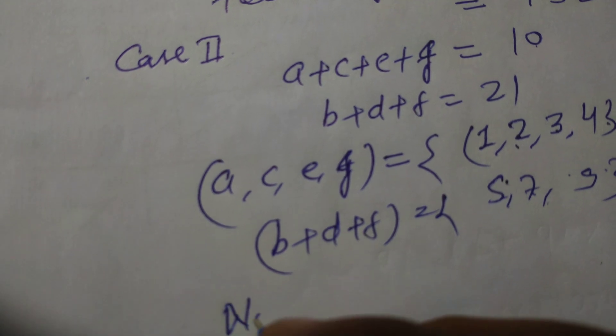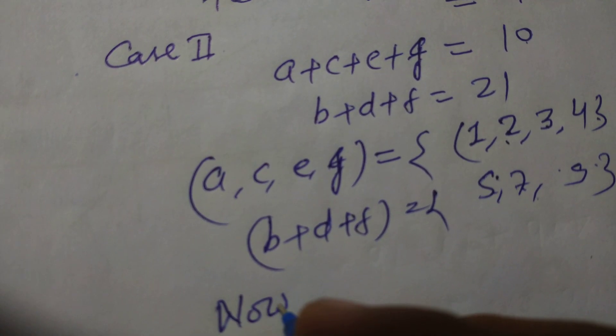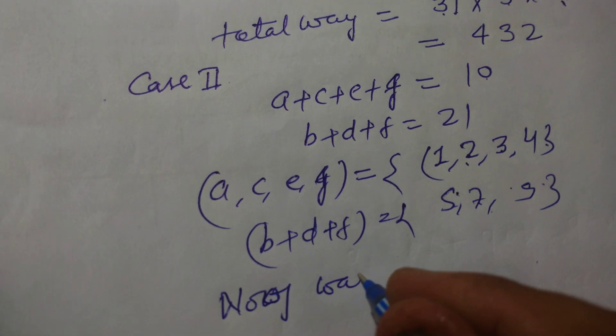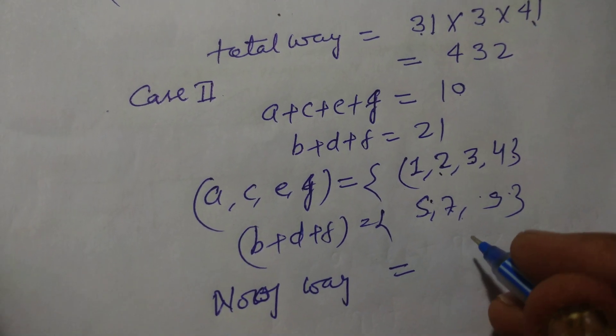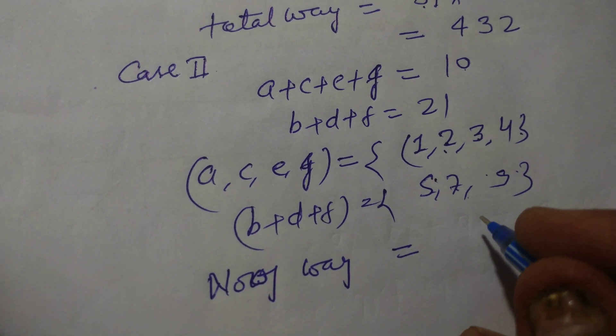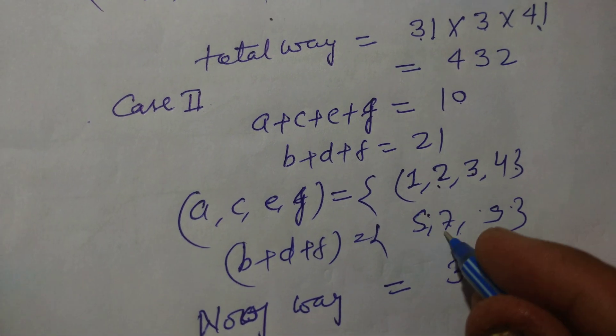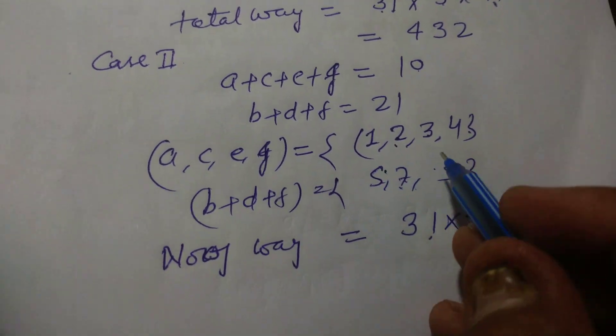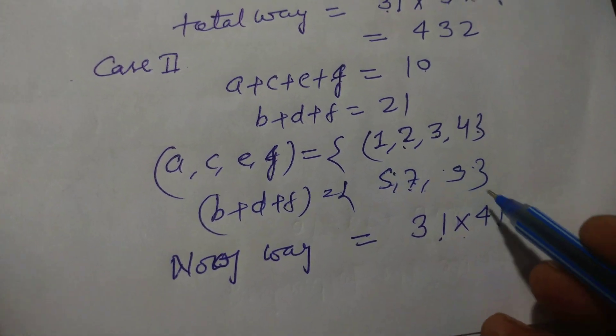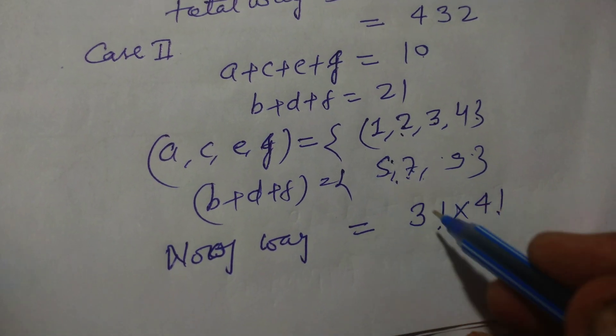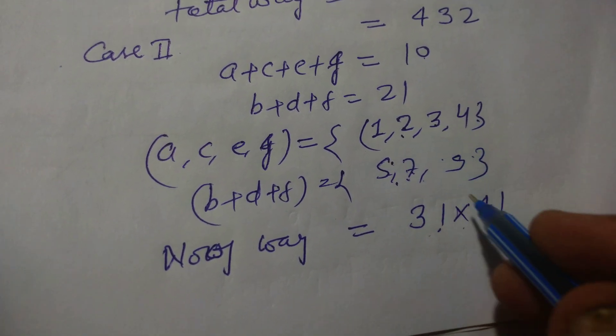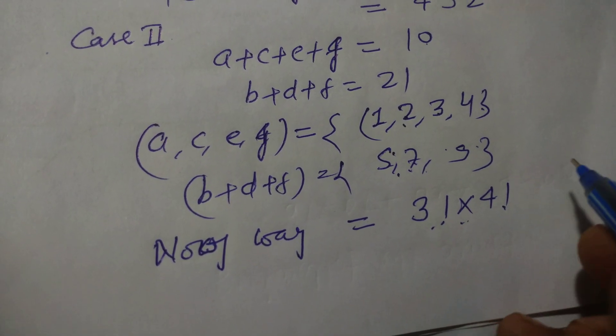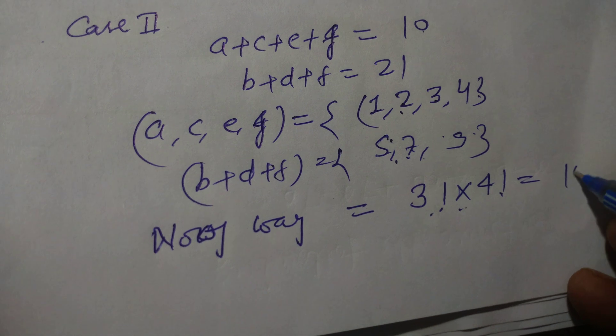Number of ways in this case equal to 3! and 4!. We can interchange this by 4! ways and this by 3! ways. Total ways equal to 3! × 4!, which equals 144.